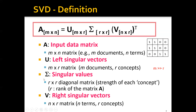The third matrix is sigma, which represents the strength of each concept globally. Note that r is exactly the rank of the matrix A. And V, which is the right singular matrix, is the n by r matrix representing n terms and r concepts. Similar to U, if a term is strongly related to a concept, the corresponding entry will be very large.